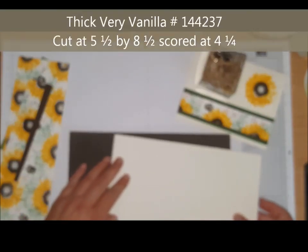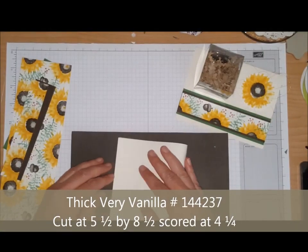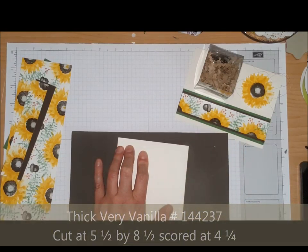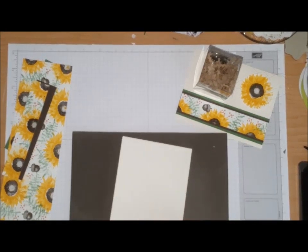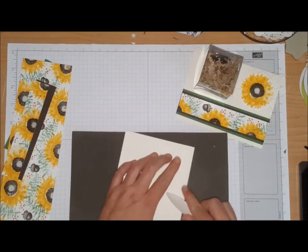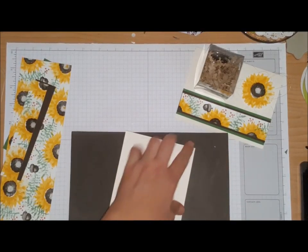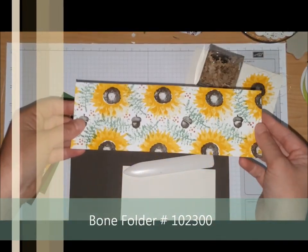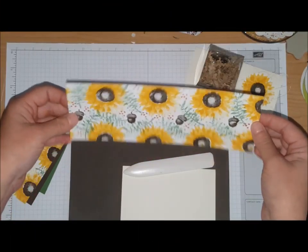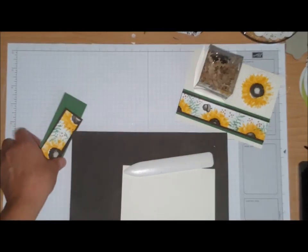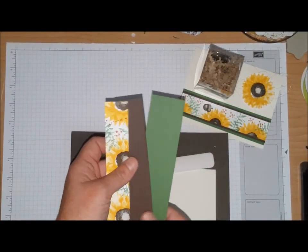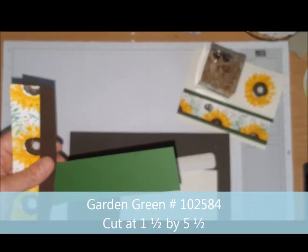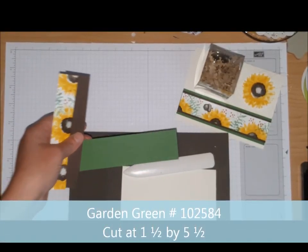The card base that I'm using today is the thick Very Vanilla and I'm just going to fold that in half. This is what the designer series paper looks like. The cardstock pieces I'm using is Garden Green and I have this piece cut at one and a half inch by five and a half.